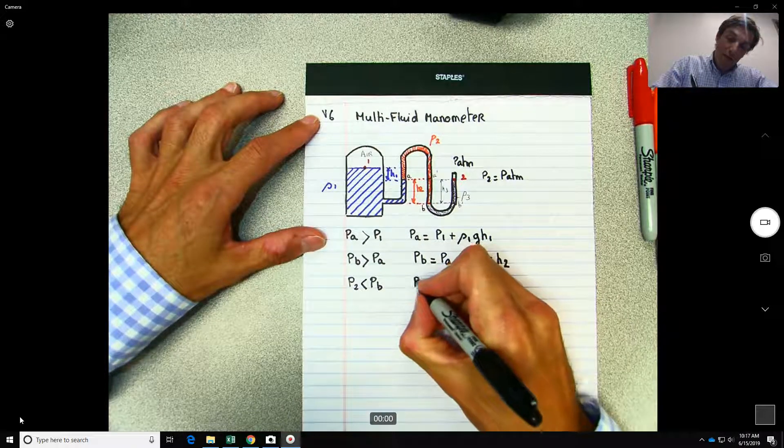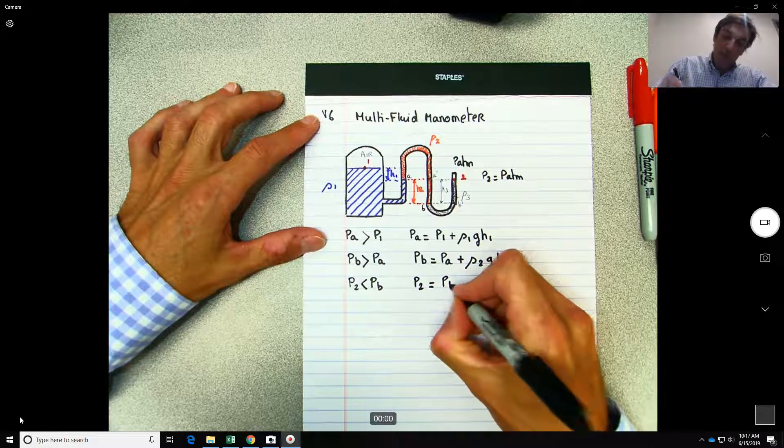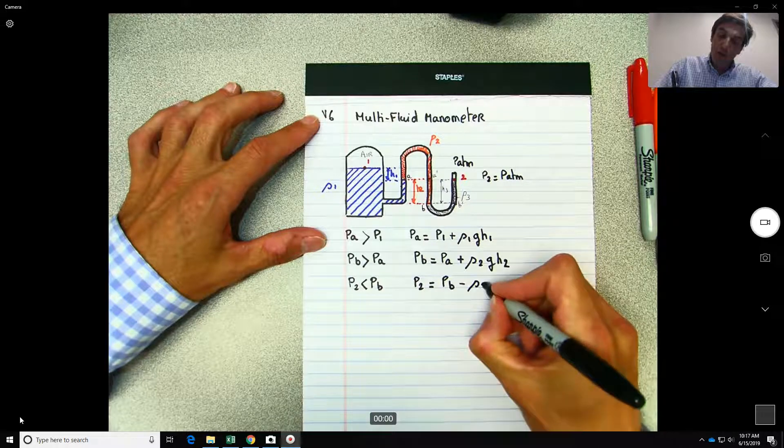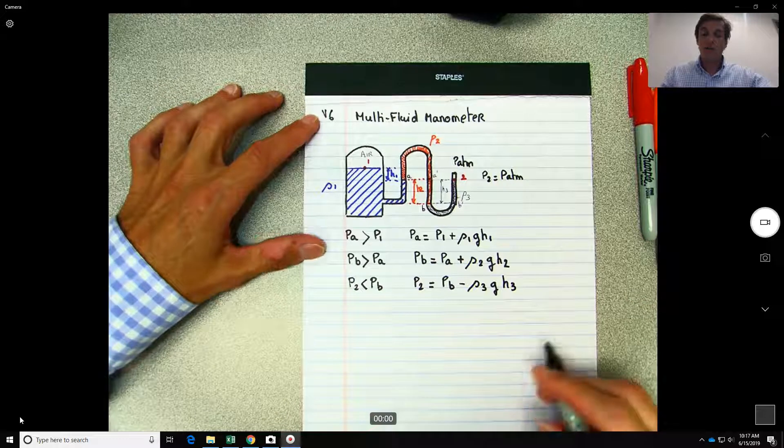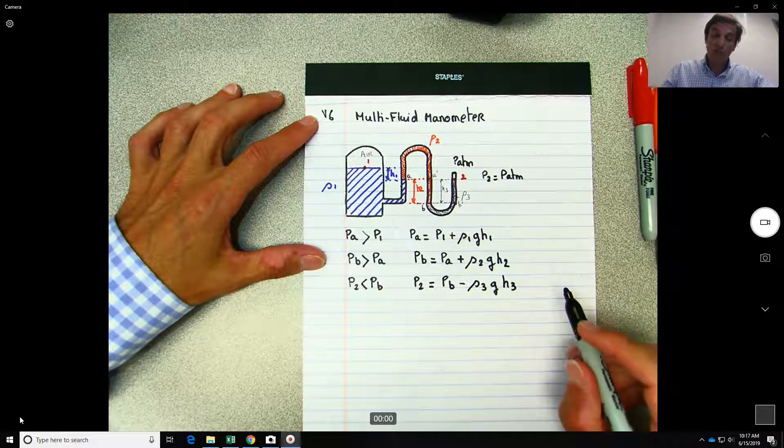So you will have P2 will be equal to what? PB, but this time instead of a plus sign, you have minus rho 3 G h3.